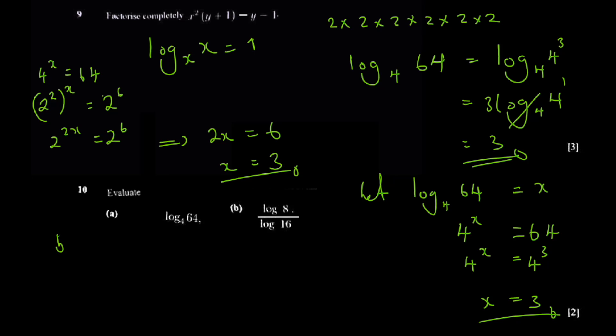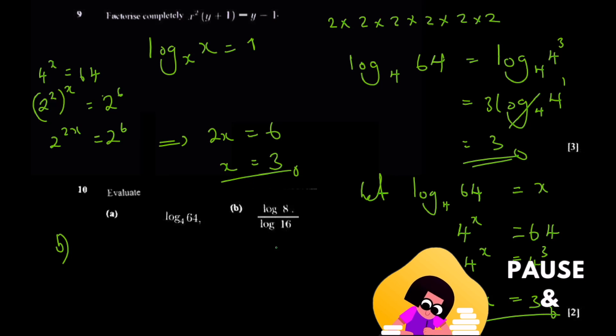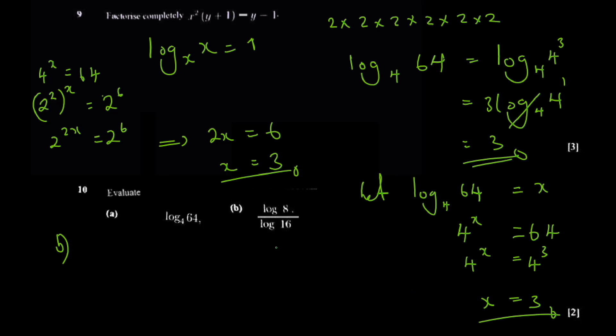The B part asks you to work out log 8 divided by log 16. How should you approach this? One suggestion is to put them in a common base using the T-diagram approach.